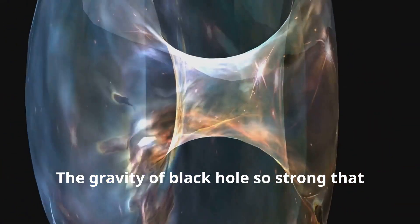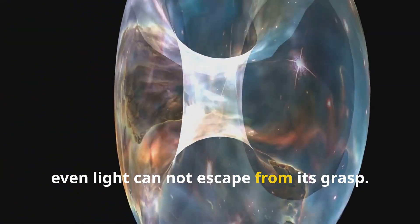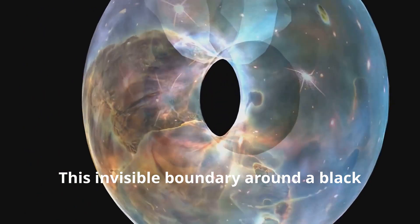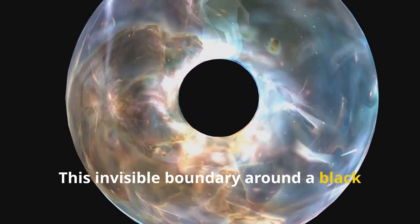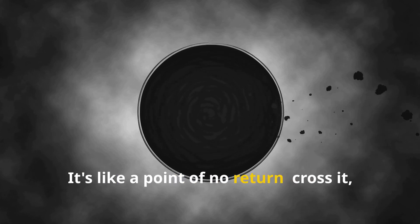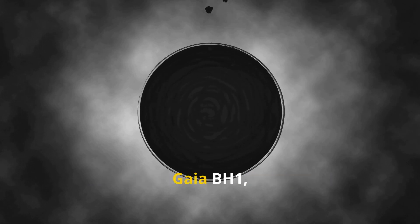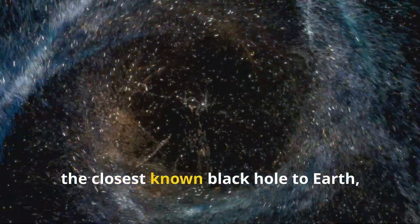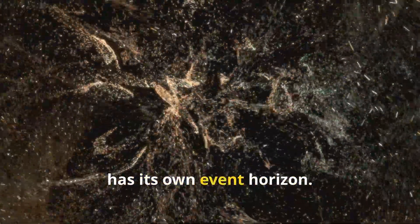The gravity of black holes is so strong that even light cannot escape from its grasp. This invisible boundary around a black hole is called the event horizon. It's like a point of no return. Cross it and you're forever trapped. Gaia BH1, the closest known black hole to Earth, has its own event horizon.